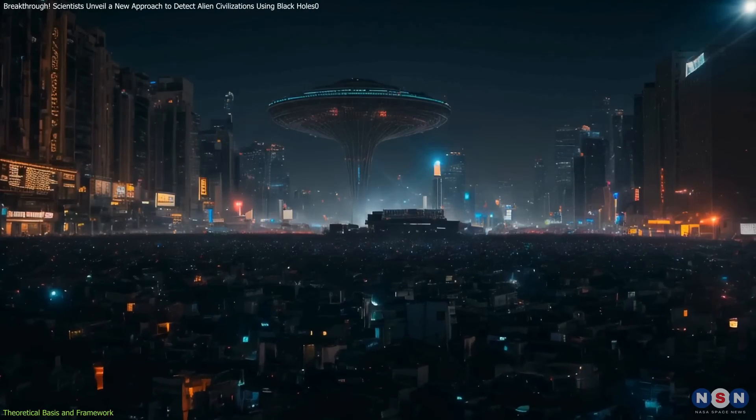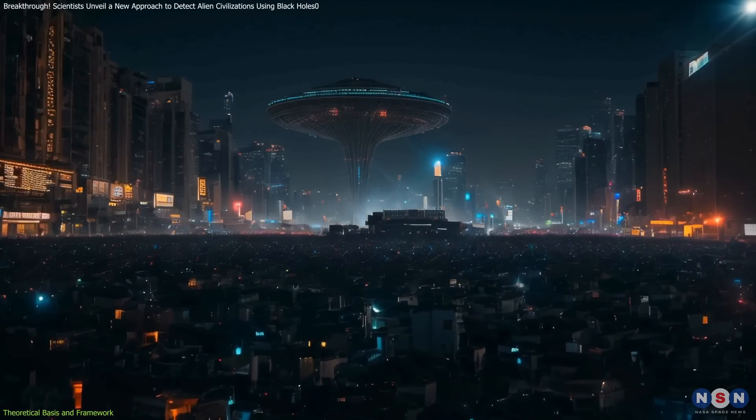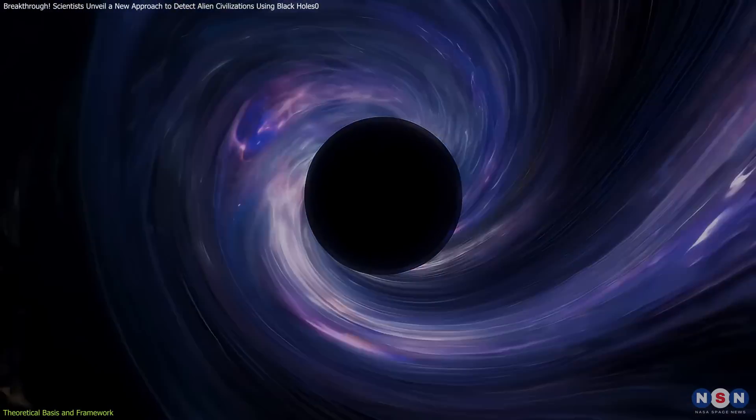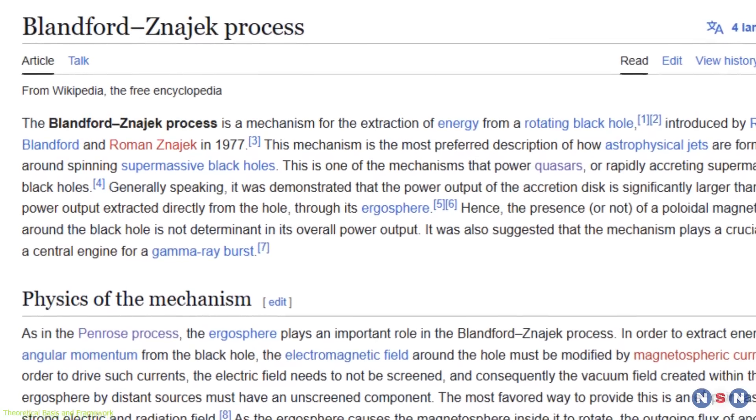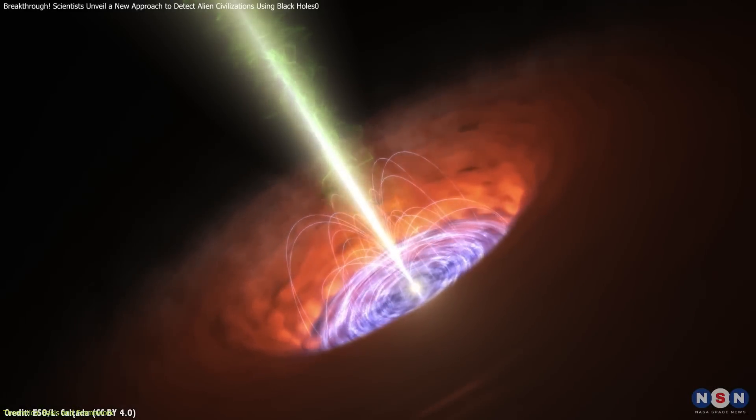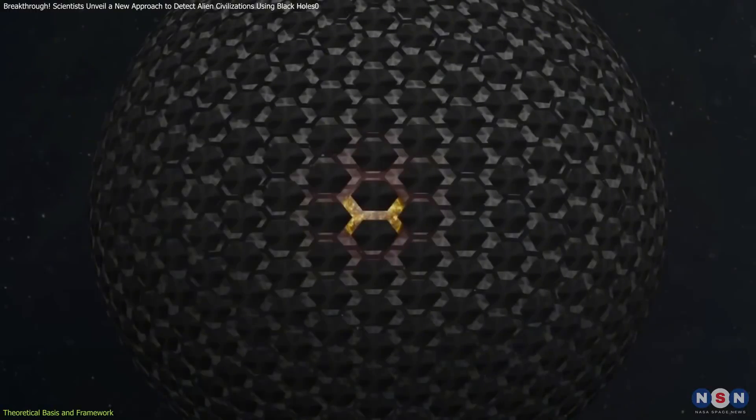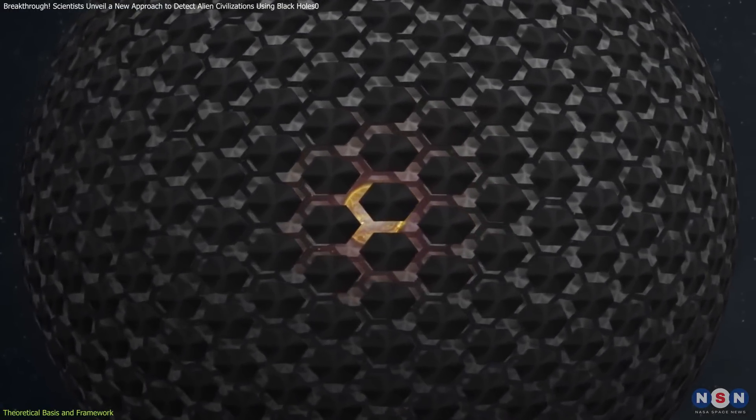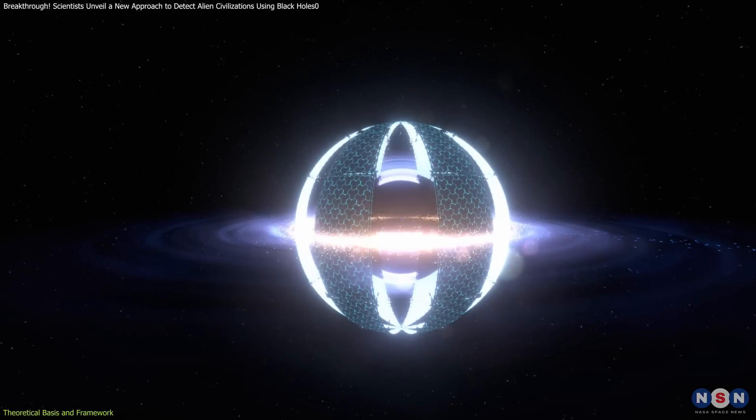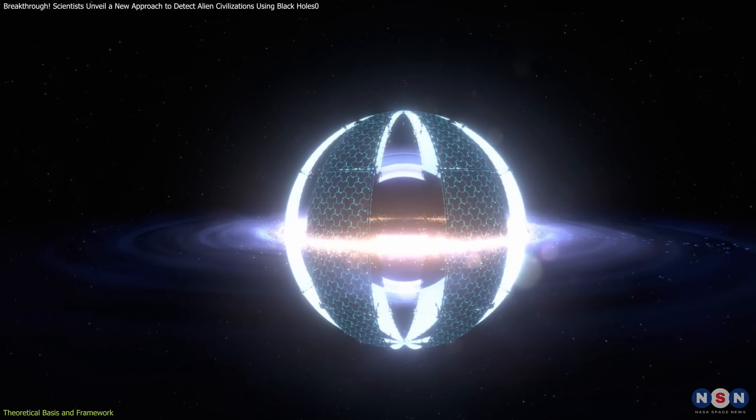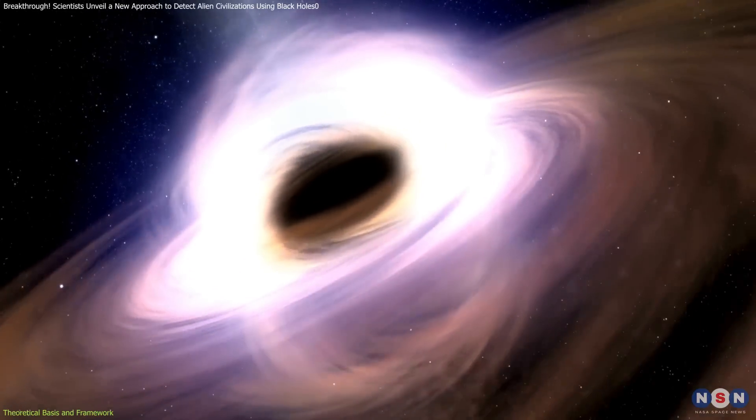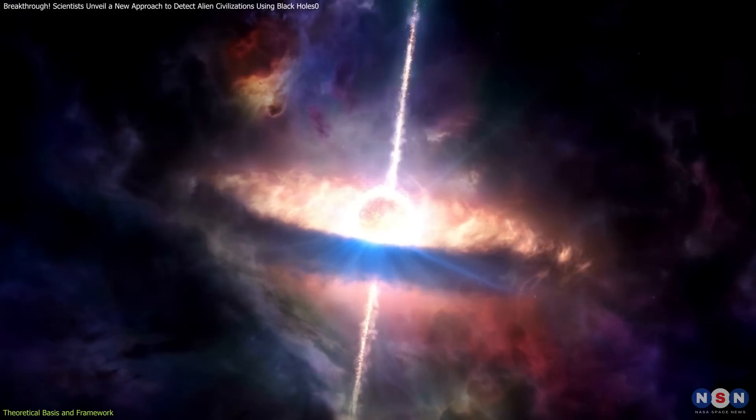Advanced civilizations might also exploit processes like the Penrose process, which extracts energy from a spinning black hole's ergo-sphere, and the Blanford-Znodzik process, which leverages magnetic fields to generate energy. A theoretical Type II civilization might build a Dyson sphere, a massive structure encasing a black hole, to harness this energy. Such a sphere would collect energy from the accretion disk, relativistic jets, and other emissions.